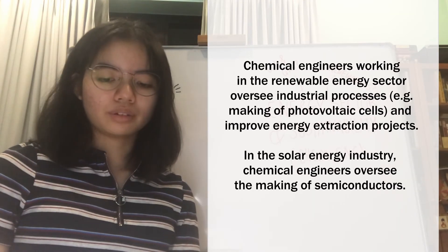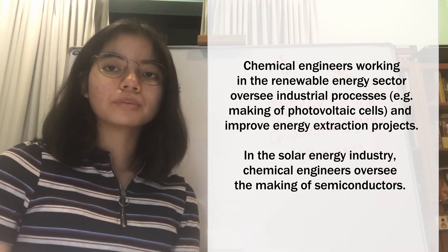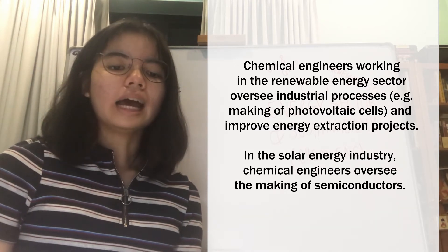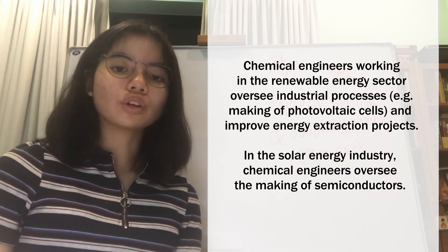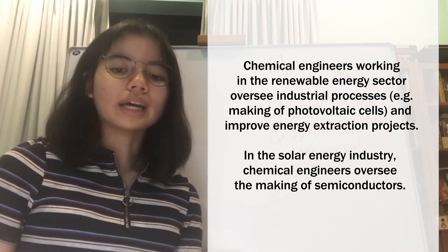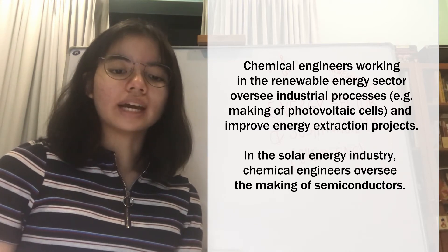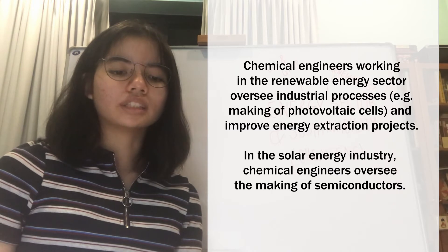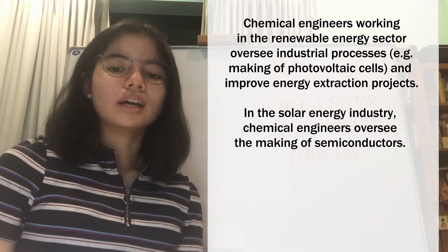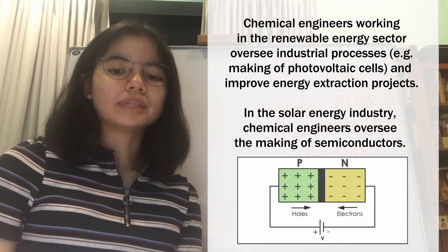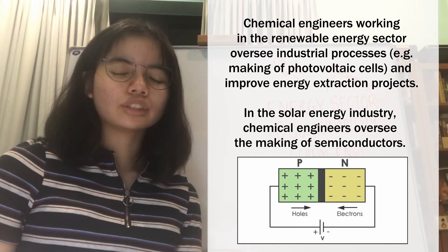As the issue of sustainability grows more urgent, chemical engineers are increasingly filling roles in the renewable energy sector, as demand for renewable energy engineers will increase in coming years. As renewable energy engineers, chemical engineers oversee industrial processes such as the manufacturing of photovoltaic cells for solar panels and constantly examine ways to improve energy extraction projects to make them greener and more efficient. For example, regarding the solar energy industry, chemical engineers oversee the production of semiconductors using a complex process of photolithography, etching, and metallization. The solar cells are composed of two different types of semiconductors, a p-type and an n-type, that are joined together to create a p-n junction.